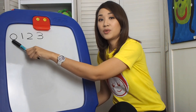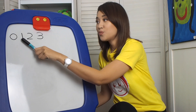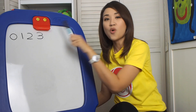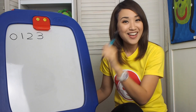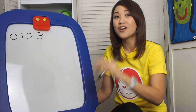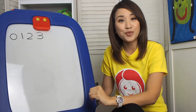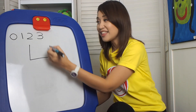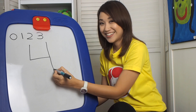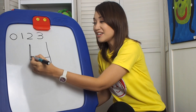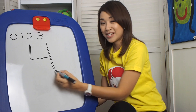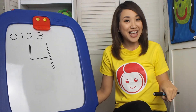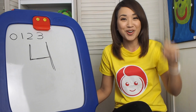Let's check our numbers again. What number is this? Zero, one, two, three. What is after number three? That is correct — number four. So how do we write number four? Make an L and then go down to make the number four.